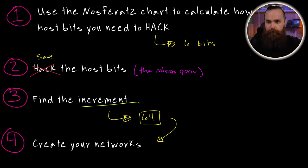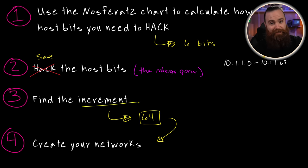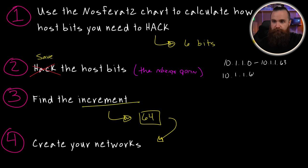We've got our increment — let's create our networks. We're starting with 10.1.1.0; our increment is 64, so the first network goes to 10.1.1.63. Because it includes zero, that right there is our subnet for the first coffee shop. We needed 40 hosts, and 64 pretty much covers that. Two down, one to go: 10.1.1.64 through 10.1.1.127.